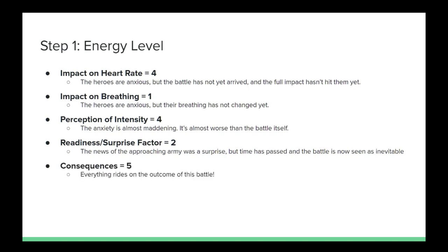Consequences and Impact — Score: Five. Everything is going to ride on the outcome of this battle. If the Varden are defeated and Eragon and Saphira captured, there will be no hope of Galbatorix ever being defeated.